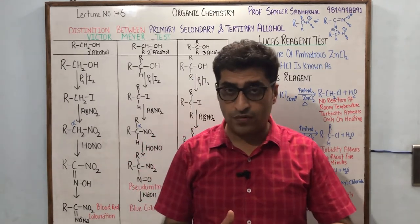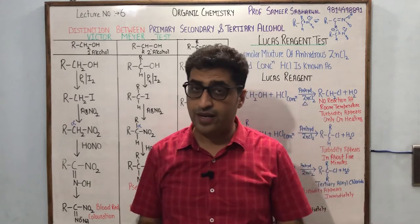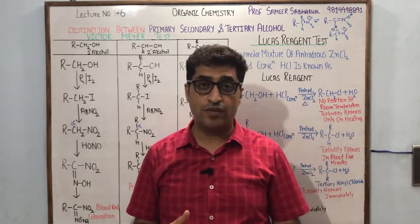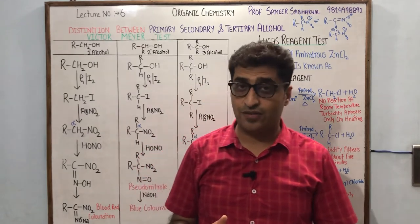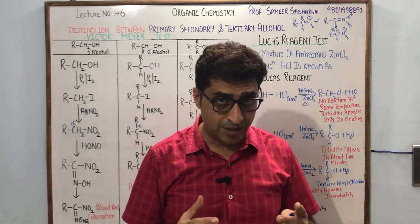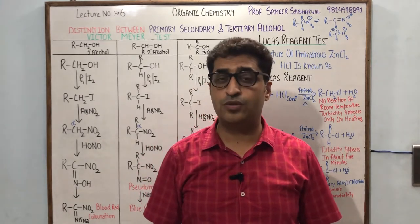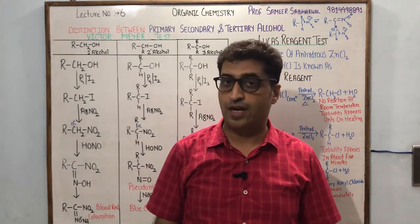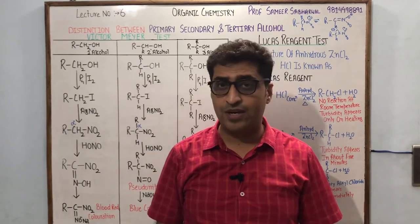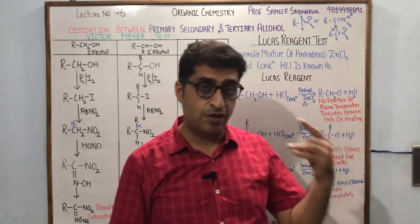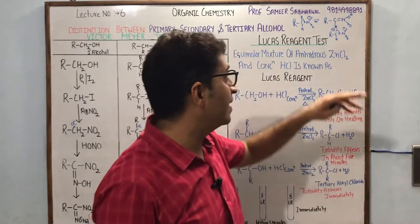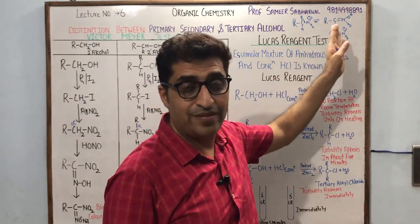We treat alcohol with phosphorus iodide to get the iodide, then nucleophilic substitution with silver nitrite in alcoholic aqueous medium gives nitroalkanes. In nitroalkanes we have acidic hydrogen because after the loss of H+, the carbanion is stabilized by resonance.